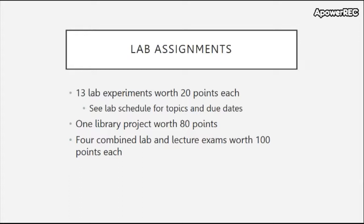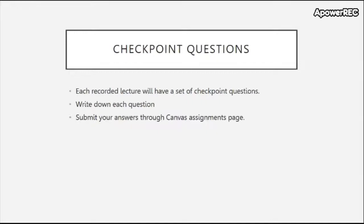Next are the lab assignments. We will have 13 lab experiments worth 20 points each — see the lab schedule for topics and due dates. There is one library lab that includes the experiment as well as a library writing project worth 80 points. You also have four combined lab and lecture exams worth 100 points each.